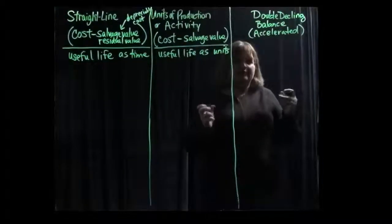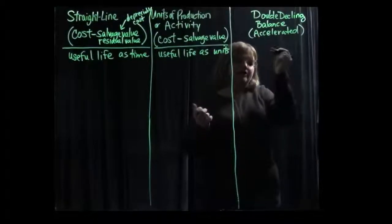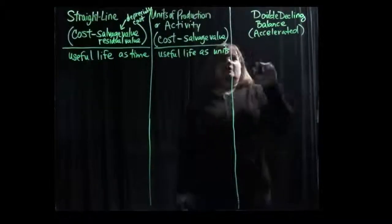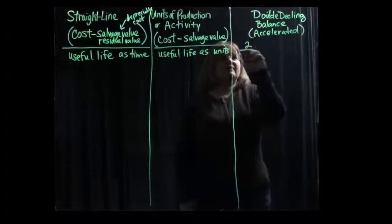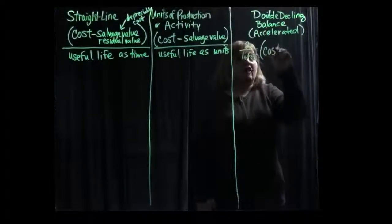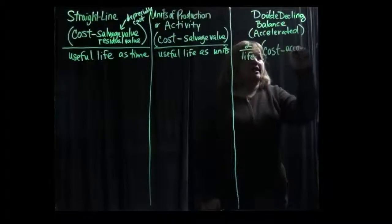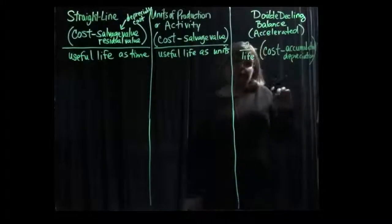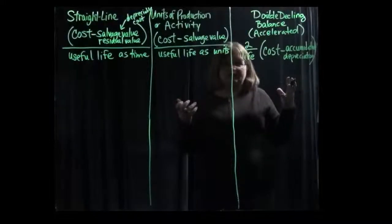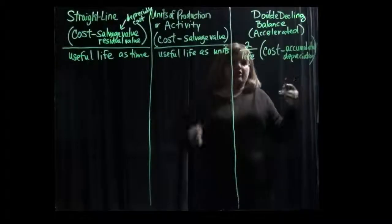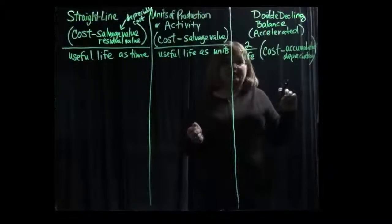The double declining balance method is called an accelerated method because we're going to recognize higher depreciation expense in the early years of the asset's life than in the later years. The formula for that is going to be 2 divided by the life in time, and then multiplied by the cost minus the accumulated depreciation. The accumulated depreciation represents the entire amount of depreciation expense that's been recognized on that asset to date — from when it was acquired through the current date — all of those added together.